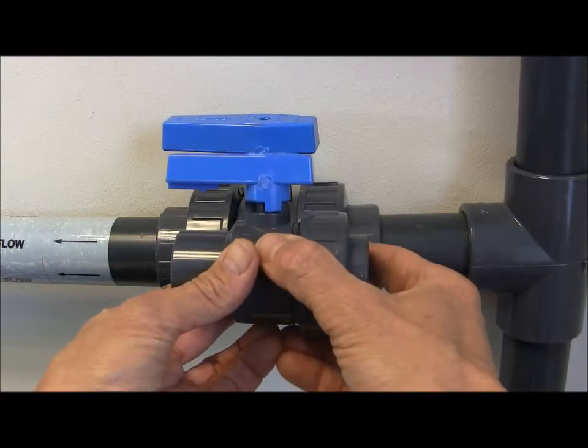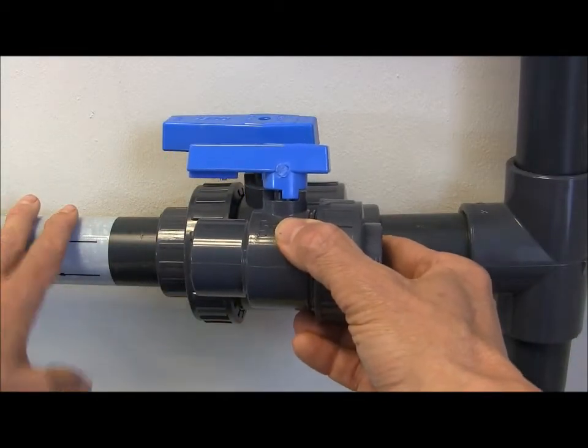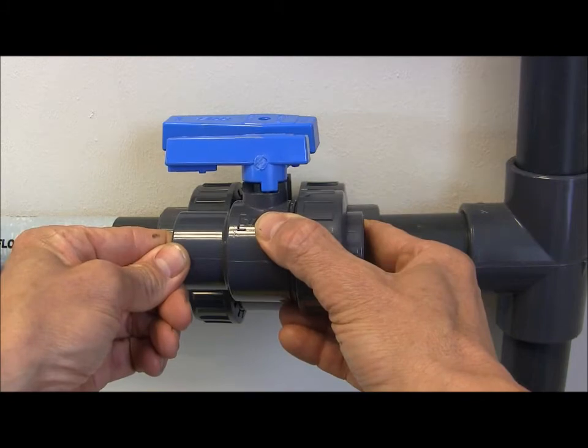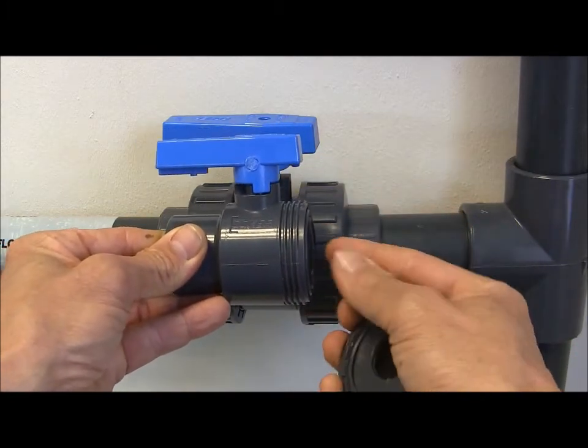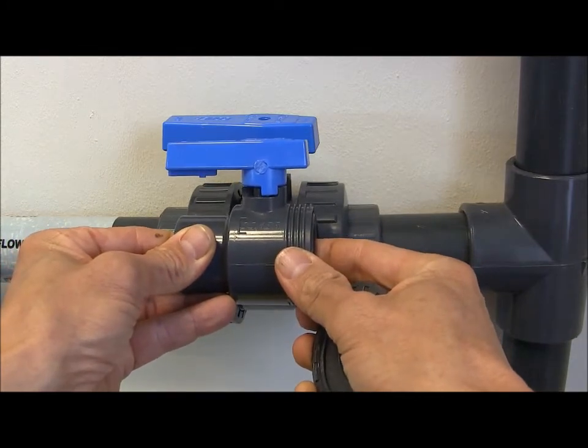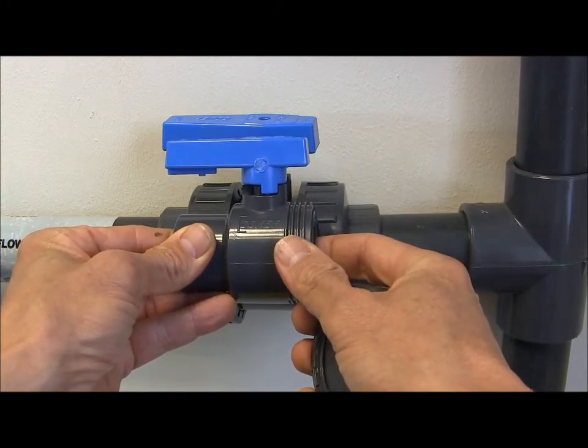If we use the single ball valve instead our discharge pipe from the valve would be glued into the discharge side of the single union ball valve. So we could only separate it on the inlet side. This would mean we couldn't remove the valve from the system to inspect it like we had the double union ball valve.